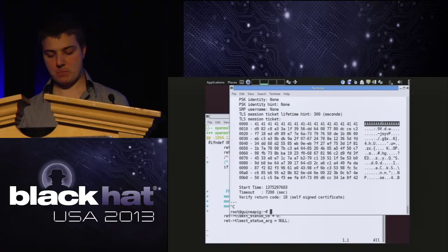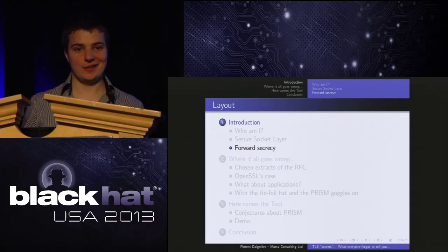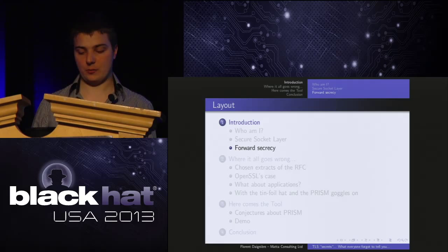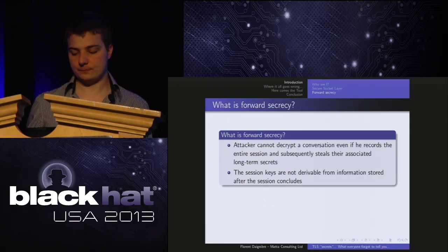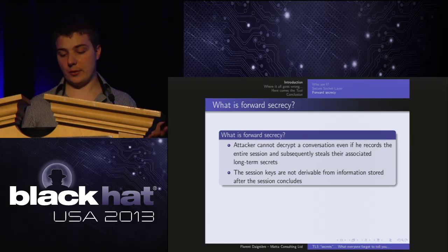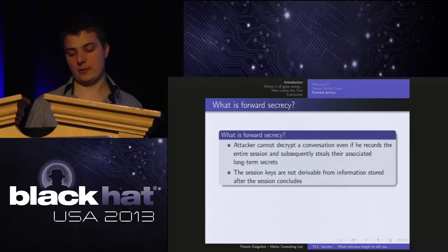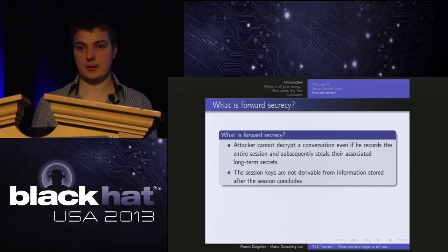So what could possibly go wrong? Lots of things — and this is what my presentation is about. But before I introduce what's actually wrong with it, I need to talk about forward secrecy. What is forward secrecy? Forward secrecy is a property which ensures that an attacker cannot decrypt a conversation even if he records the entire session and subsequently steals the associated long-term secrets. In other words, it ensures that the session keys are not derivable from the information stored after the session concludes. It's a very important property.